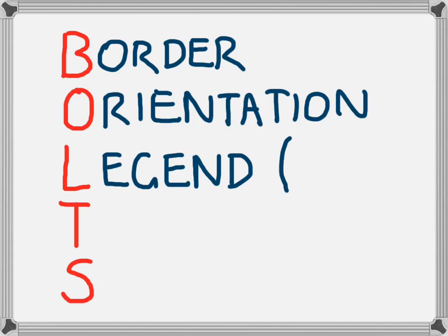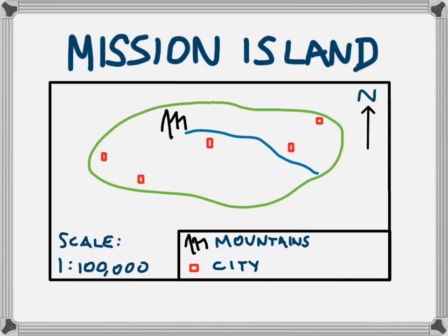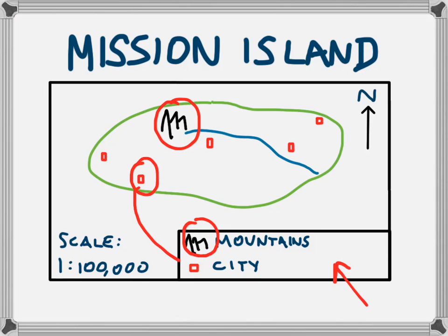L stands for legend, and sometimes a legend is called a key. The key on the map is this section down here, and it shows what the symbols on the map represent. So this area here we can look down and see that is mountains. And each of these red squares here we can look down and see that each is a city. We have read that off the legend or the key.